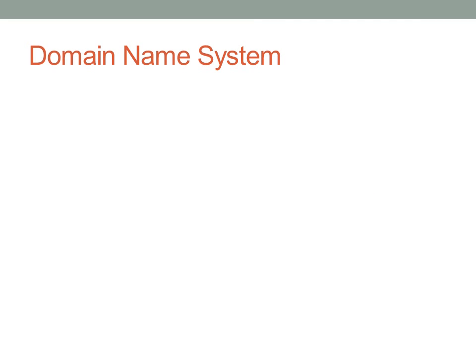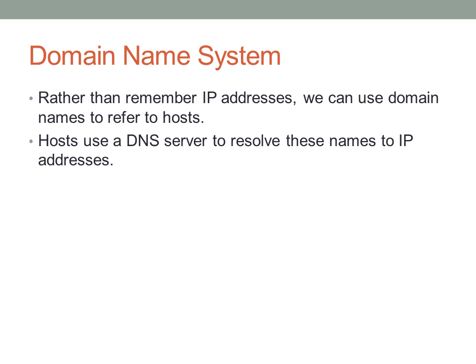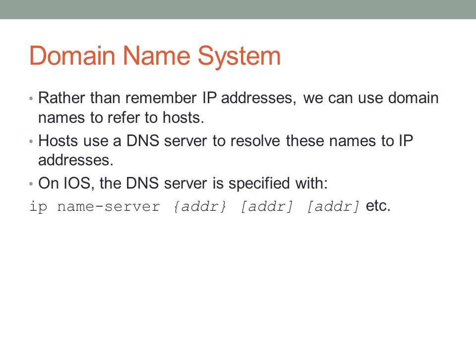Another thing you probably use every day is domain name system. Despite the logical nature of internet protocol, it makes even more sense to use a naming system rather than numbers. For example, you don't type an IP address — you usually just type google.com. With DNS we don't have to remember IP addresses; we can use domain names to refer to various hosts. A host will send a request to a DNS server asking what IP address is associated with a name, and the server replies with a DNS resolution that resolves the name to an IP address.